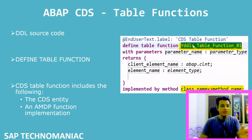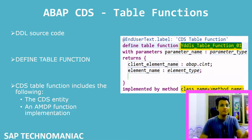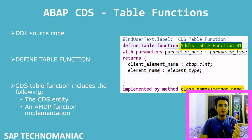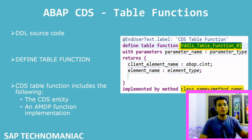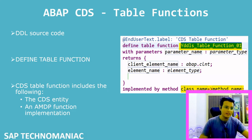After giving the CDS entity name, we define any required importing or input parameters. Then, instead of a SELECT statement — and this is very important — we write the elements we want to return in the return list. For example, if we need to hit three or four tables and get specific elements, all those elements go in the return list. Finally, we write 'implemented by method' with a class name and method.